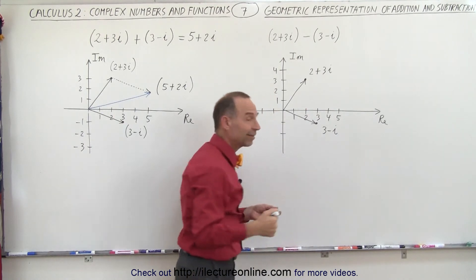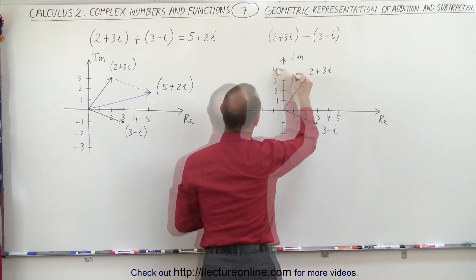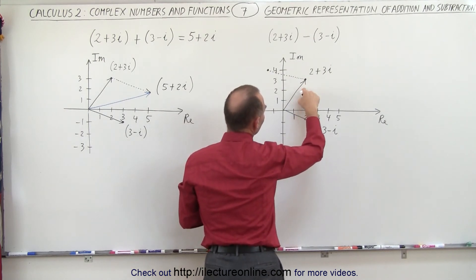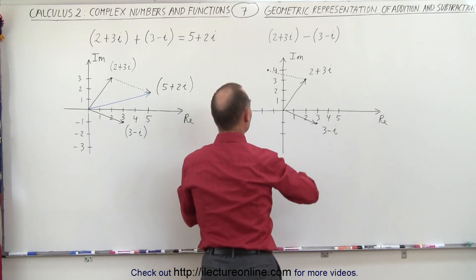Now when we subtract, that's like adding the negative of a vector. So when we now draw the vector in this direction, like that, this is like taking this number and subtracting this number from it, and we should get a resultant that looks like this.